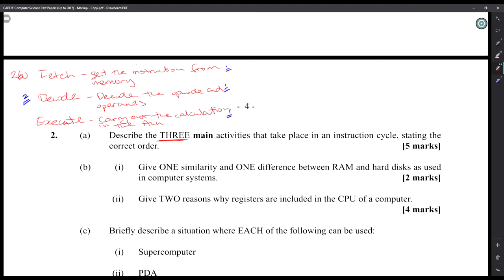Give one similarity and one difference between RAM and hard disk as used in computer systems. RAM is volatile. So one similarity is that they both store information, and the difference is RAM is cleared when the power goes off, or when the power is removed. Hard drives retain the data when power is removed.